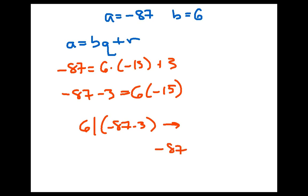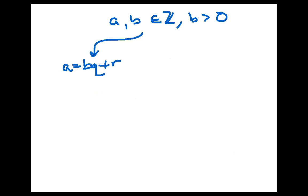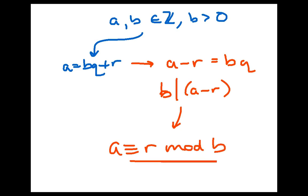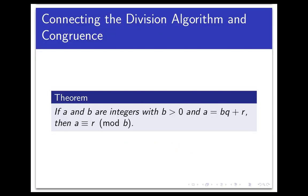So, in general, if we have any two integers a and b with b bigger than 0, the division algorithm gives us values q and r such that a equals bq plus r. And subtracting the remainder gives us a minus r equals bq. And so what that means is that a minus r is a multiple of b, which means a minus r is divisible by b, which means that a is congruent to r mod b. So, in other words, and I'll state this as a theorem, if a and b are integers with b positive and a equal to bq plus r, then a is congruent to r modulo b.